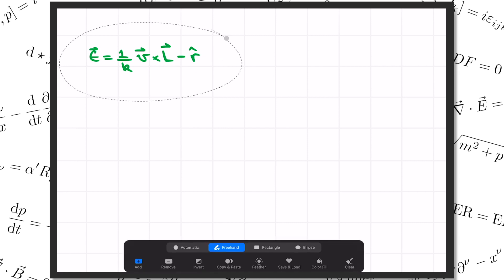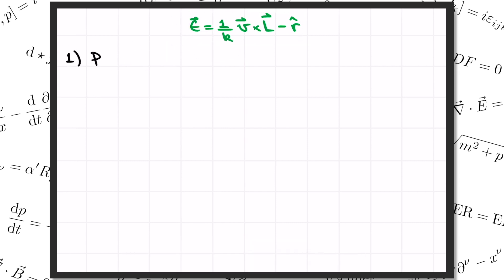Alright, there are two things that we still need to check. First of all, that this vector epsilon actually is a constant like I claimed. And second, we need to check that its magnitude is actually the eccentricity like we defined it before.